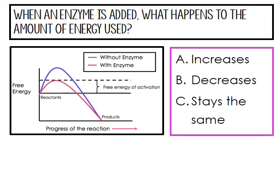Quiz time: When an enzyme is added, what happens to the amount of energy used? Looking at the graph, the purple line is without the enzyme and the pink line is with the enzyme. Is the energy going to increase, decrease, or stay the same? If you answered decrease, you are correct — the graph with the enzyme is much lower, so the amount of energy required is much less.